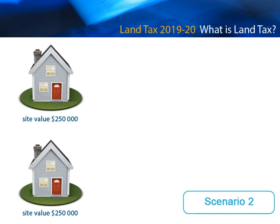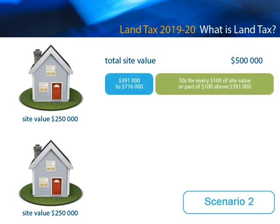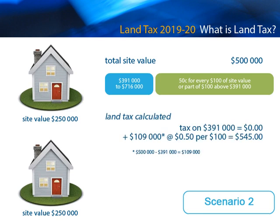In Scenario 2, two taxable properties are owned, each with a site value of $250,000. The total site value is $500,000, which falls within the first rate level of land tax. In this scenario, land tax will be calculated on the additional amount above the tax-free threshold, resulting in a land tax liability as shown in green on the screen.